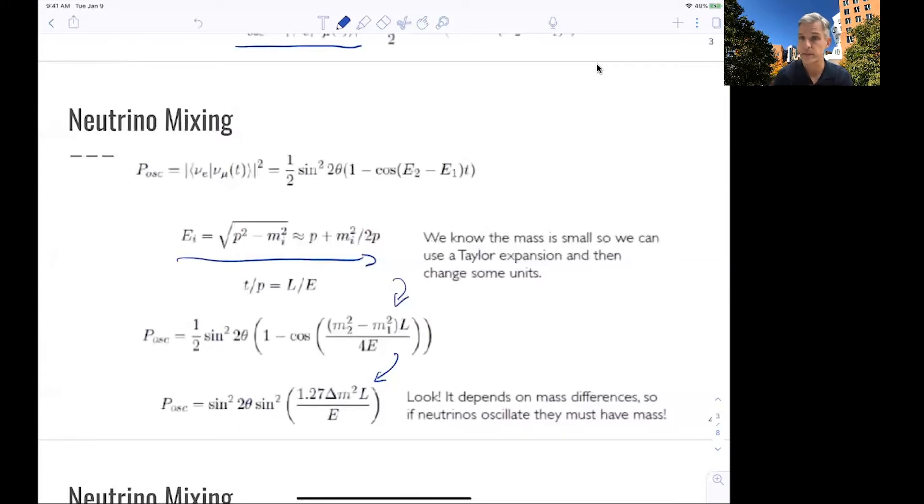So this is fantastic because now, by studying the probability for a neutrino to change its flavor, we can infer the mass differences of two states. This is fantastic.